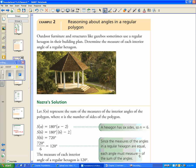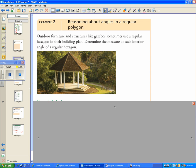Outdoor furniture and structures like gazebos sometimes use a regular hexagon in their building plan. Determine the measure of each interior angle of a regular hexagon. A regular hexagon - the word regular means that every single side is the same. A hexagon - hex is kind of evil, so it's the number six. So it means every side is exactly the same, which also means that every angle is exactly the same.